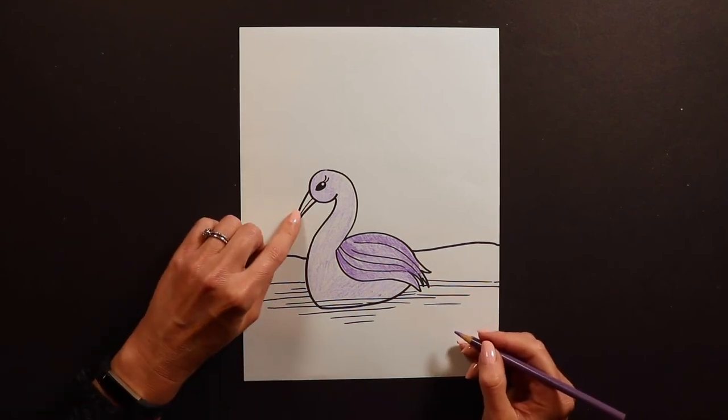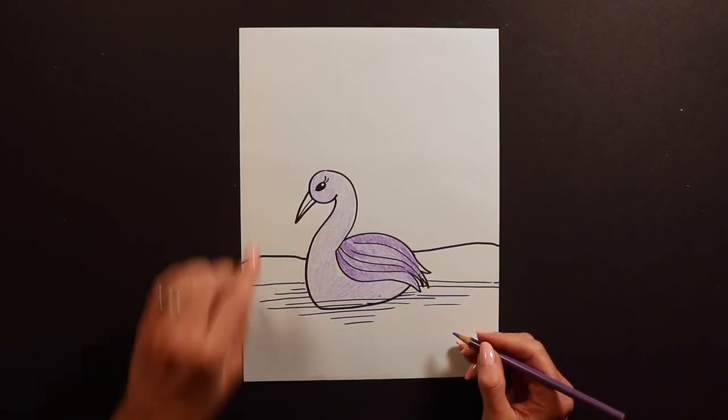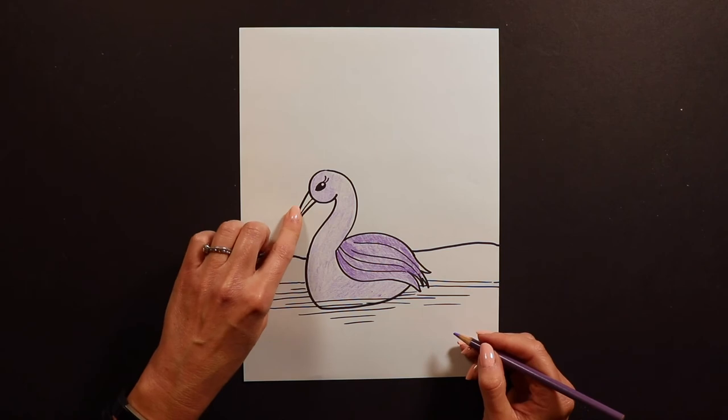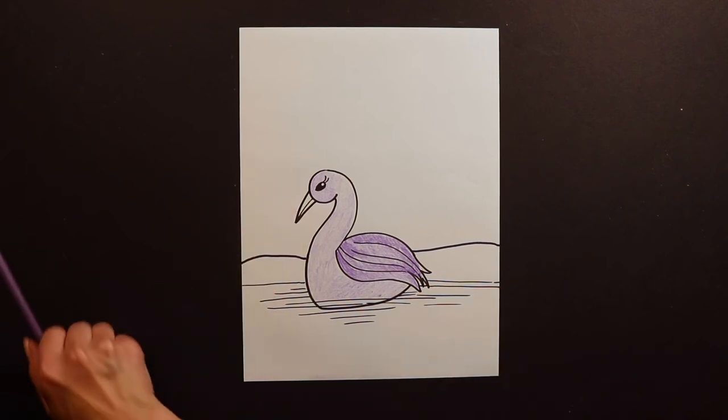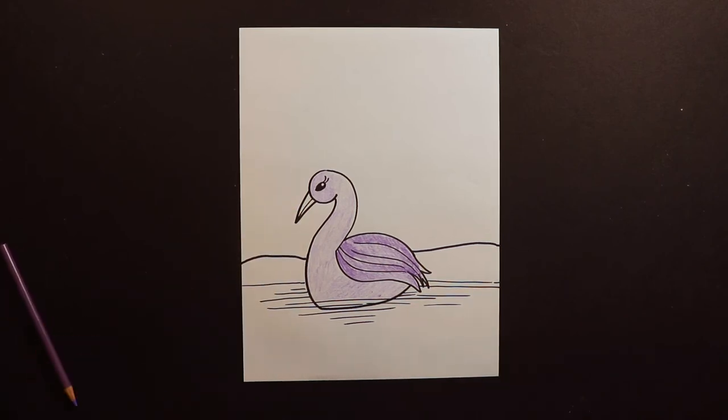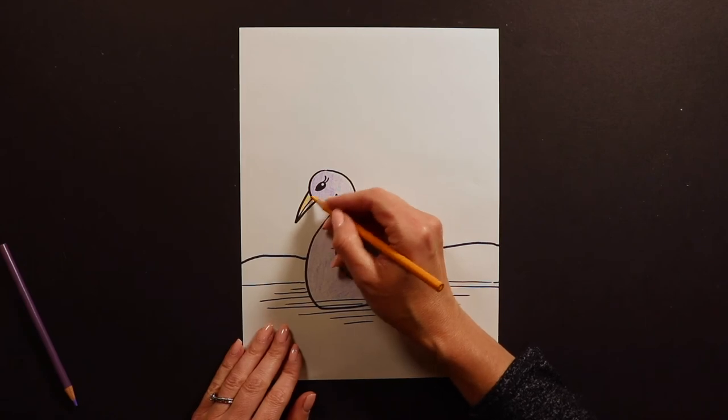The beak I'm going to go ahead and leave that white but if you guys wanted to make it gray or if you wanted to make it gold. You know what actually I might make it gold. I think just like a light gold color might be kind of pretty, especially since the swan is purple.